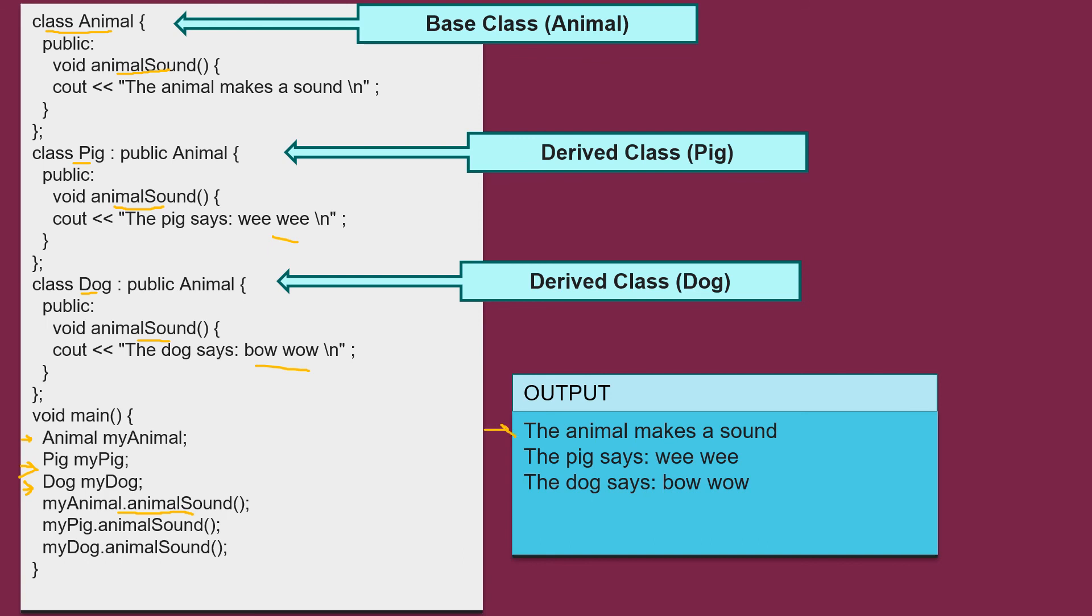See the output is the animal makes sound. This has been printed. Next it is calling my pig dot animal sound. It will print the pig says wee wee. This statement. Then it is calling my dog dot animal sound which is the dog says bow wow. Hence polymorphism helps reduce complexity by allowing the same interface to be used to access a general class of actions.